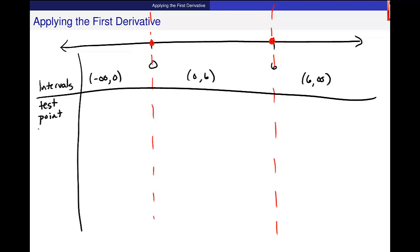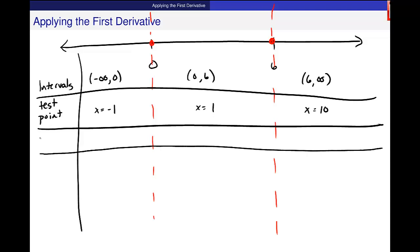Now I need to find a test point in each of these intervals and I want to test the first derivative in those. So here we go. In this one maybe I'll choose x is equal to negative 1. In here x is equal to 1. And out here x is equal to 10. Those are points that you're just picking randomly. F prime of the test point.